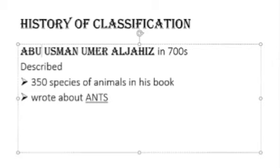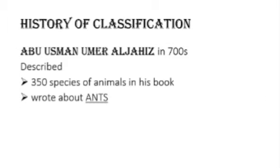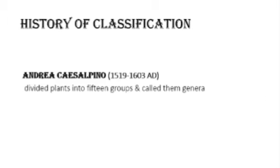Next comes Abu Usman Umar al-Jahiz. In the 700s, he described 350 species of animals in his book. He also wrote about ants. These were two major contributions of Abu Usman al-Jahiz.